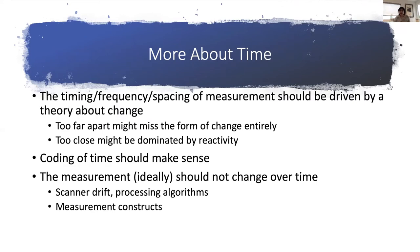Let's talk a little more about time. The timing, frequency, and spacing of your measurements should be driven by a theory about change. Otherwise, you risk missing the form of change entirely. For example, if you're studying a phenomenon in adolescence where there's a very rapid period of growth, if you don't sample often enough, you may just reach the beginning and end with no idea of what happens in between—which is the question of interest.